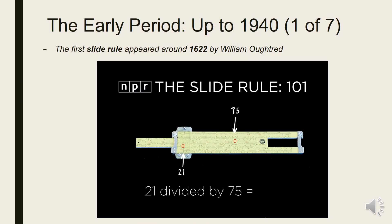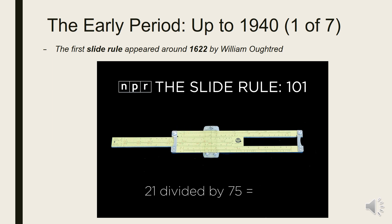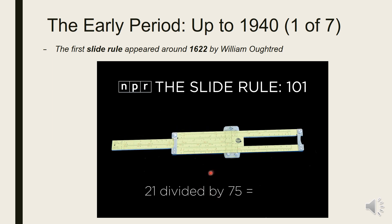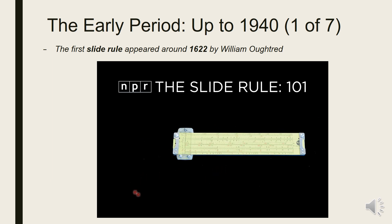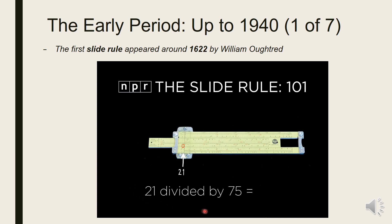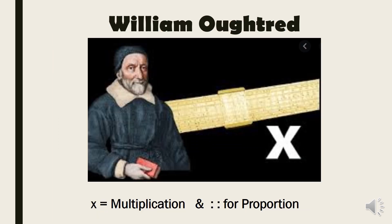Still under the 17th century, the first slide rule appeared in 1622 by William Oughtred. The slide rule is used primarily for multiplication and division, and also for functions such as exponents, roots, logarithms, and trigonometry, but typically not for addition or subtraction. William Oughtred also invented many new symbols including x for multiplication and a double colon for proportion.